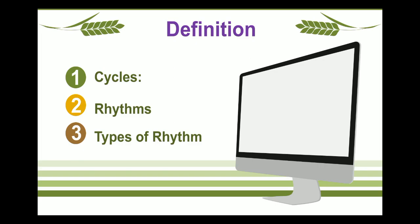Types of Rhythms: Rhythms are mainly classified into three types. First, Ultradian Rhythms — if a cycle is less than 20 hours, such cycles are known as ultradian rhythms. Example: Neuron firing. A neuron takes only microseconds to fire an action potential, involving a series of events: entry of sodium, entry of calcium, then exit of sodium, then entry of potassium. These events occur time to time according to schedule and are known as ultradian rhythms.